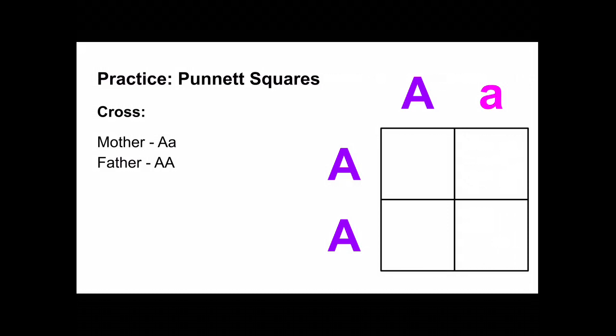Now we're gonna drop mom's alleles down into the column right below each allele, and move dad's alleles across, just like that. Now it looks a little bit funny to have little A, big A, so we're gonna just switch those. Both of them, just like that.